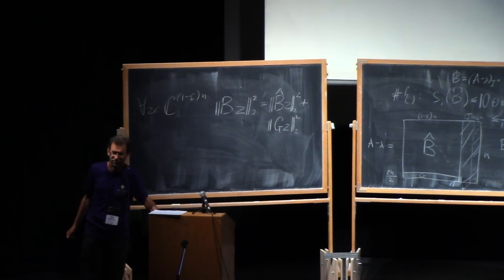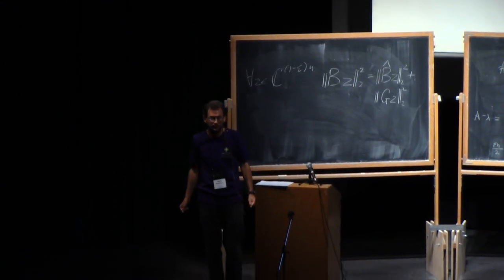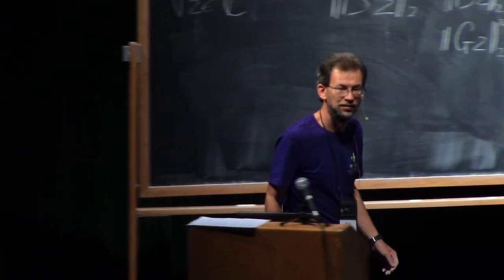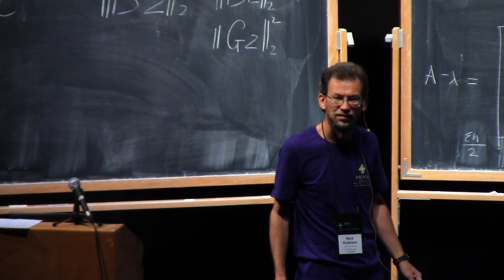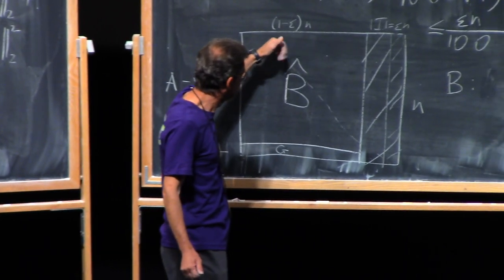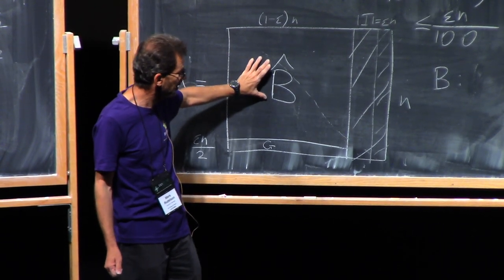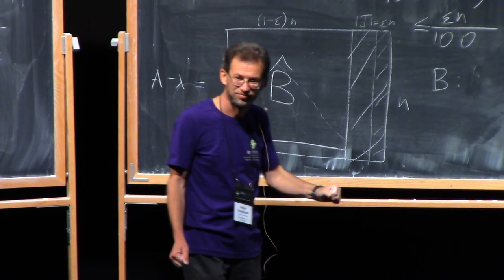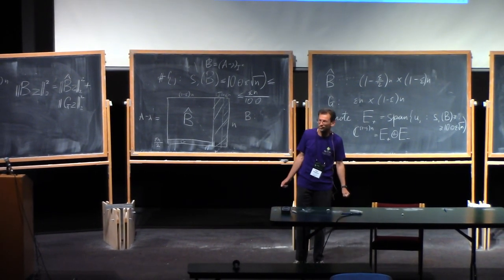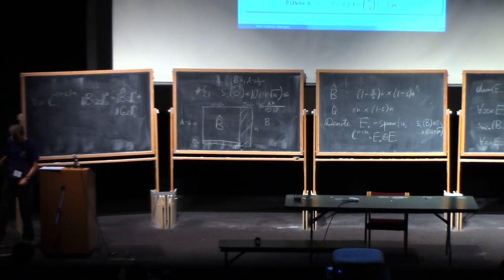Next time we are going to discuss the applications of this result to random graphs. Any questions? Of course, we repeat the whole story for B hat — then E plus and E minus are defined by B hat and they become independent of G. We'll resume in about 10 minutes.